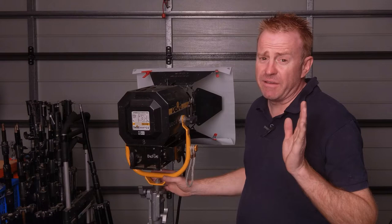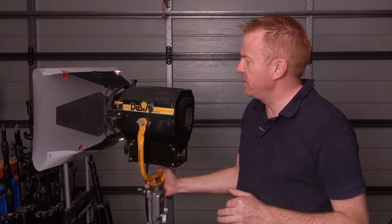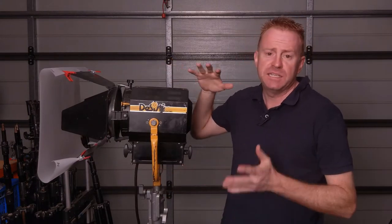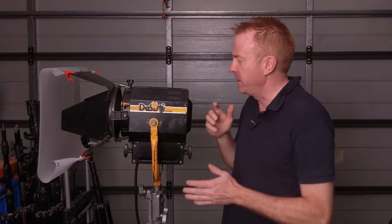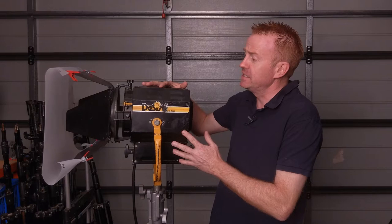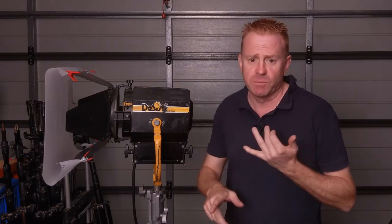All right, so in case you haven't figured out yet, we're talking about reducing the light level out of a light that doesn't dim. Okay, if you've got an LED with a dimmer on the back you just twist the knob.